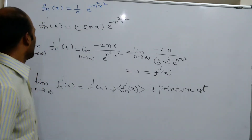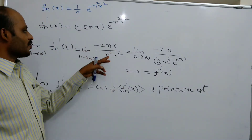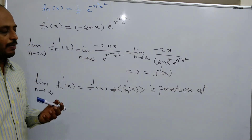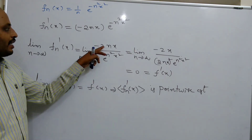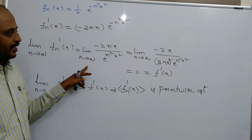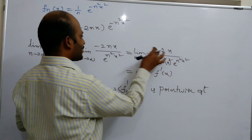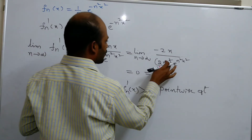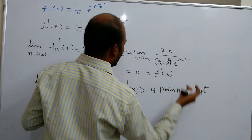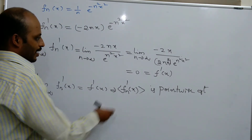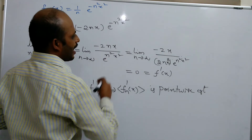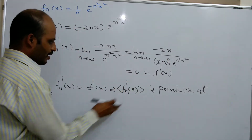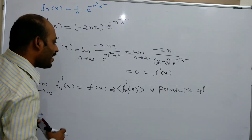As n → ∞ the term −2nx/e^(n²x²) gives the ∞/∞ form. By L'Hôpital's rule we differentiate with respect to n: numerator gives −2x, denominator gives 2nx²·e^(n²x²). Since 1/n → 0 as n → ∞, the complete term becomes 0. So the sequence fn'(x) is pointwise convergent.